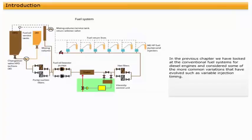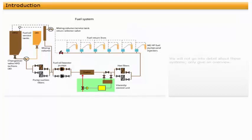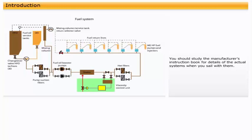In the previous chapter, we looked at the conventional fuel systems for diesel engines and considered some of the more common variations that have evolved, such as variable injection timing. Now we will have a brief look at some of the other variations that you may come across on the vessels that you sail on. We will not go into detail about these systems, only give an overview. You should study the manufacturer's instruction book for details of the actual systems when you sail with them.